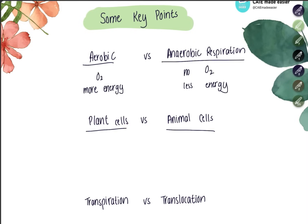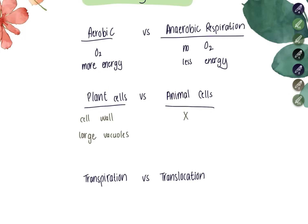Plant cells and animal cells share similarities but also have key differences. Plant cells have a cell wall and large vacuoles, giving them a fixed shape. Animal cells do not have a cell wall, may have small temporary vacuoles, and do not have a fixed shape. Both have a nucleus, cytoplasm, cell membrane, and organelles such as ribosomes and mitochondria. If a plant cell is from a green leaf, it also has chloroplasts.